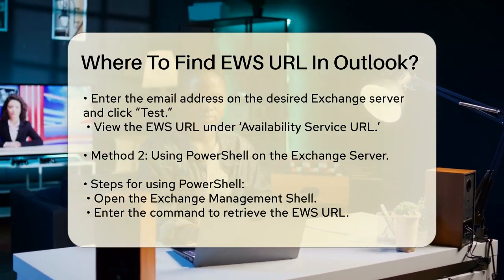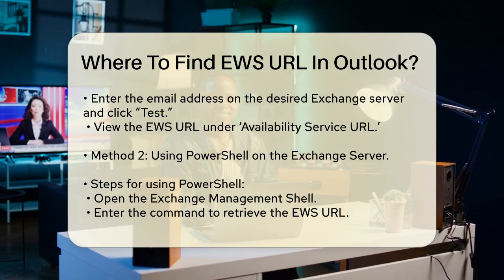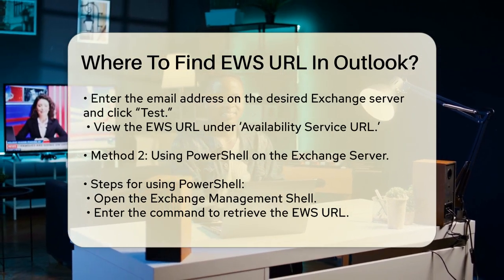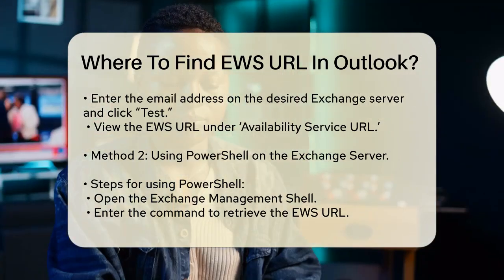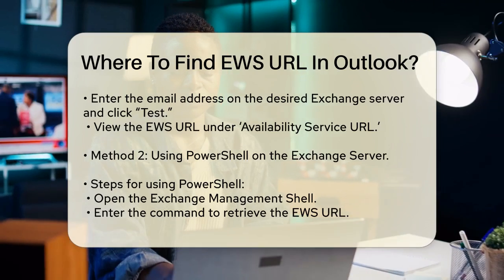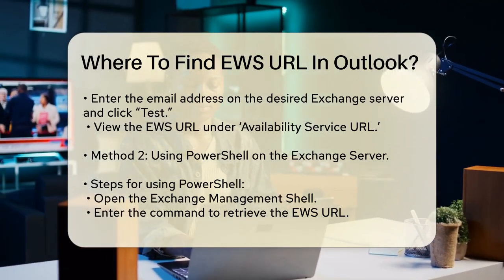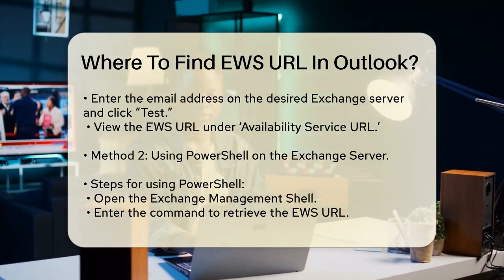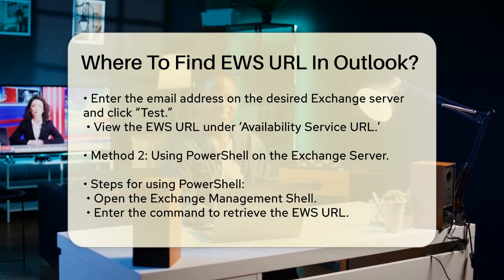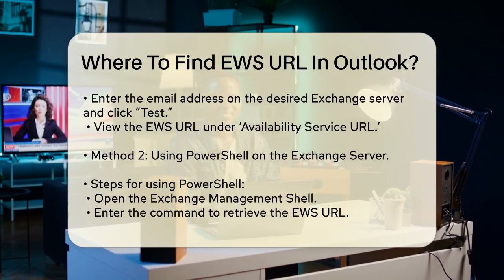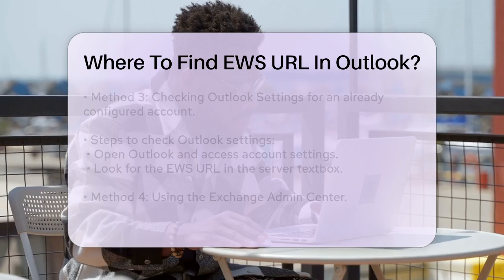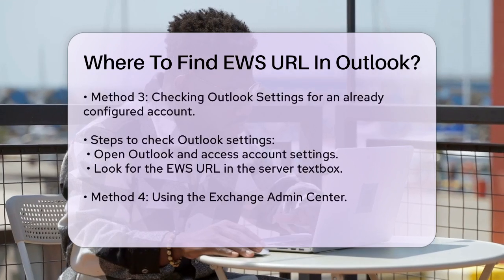Using PowerShell on the Exchange server: if you have access to the Exchange server, you can use PowerShell to find the EWS URL. Open the Exchange Management Shell on the Exchange server. Type the command Get-WebServicesVirtualDirectory, select Name and URL fields, and press Enter. The URL will be displayed in the output.